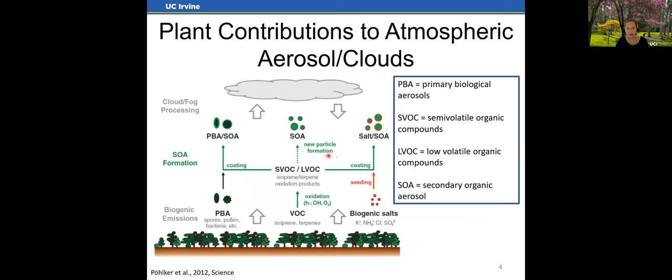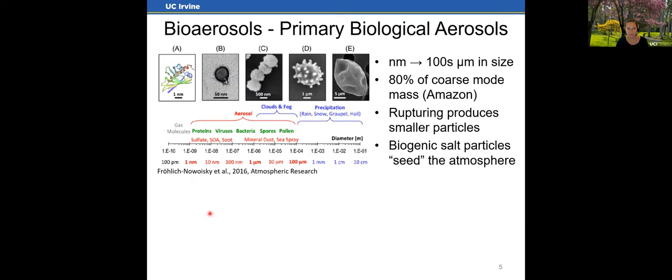I want to start by thinking about this from the bottom up — how plants contribute to atmospheric aerosols and clouds. Some of the ways plants do that are summarized in the schematic here, with an acronym legend on the right-hand side. I first want to talk about primary biological aerosols, which are emitted directly from plants in the case of pollen, or from fungi often associated with plants in the form of spores.